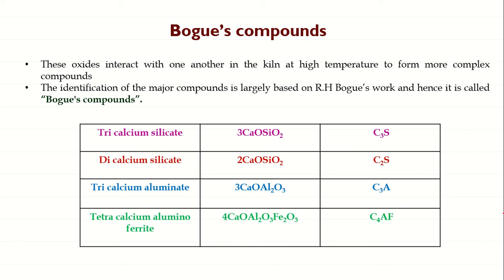For simplicity, abbreviated notations are used: C stands for CaO, S stands for SiO2, A stands for Al2O3, and F stands for Fe2O3. Later, when discussing hydration, H is used where H stands for H2O. So tricalcium silicate is written as C3S — C3 means three times CaO and 1S which is SiO2. That is how all the abbreviations are given for the Bogue compounds.